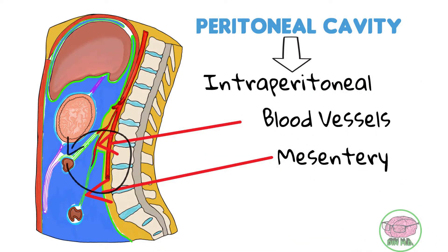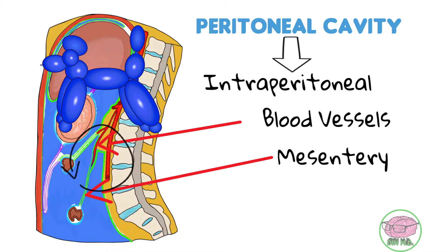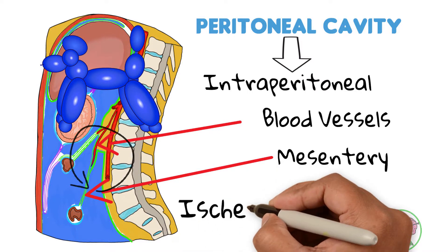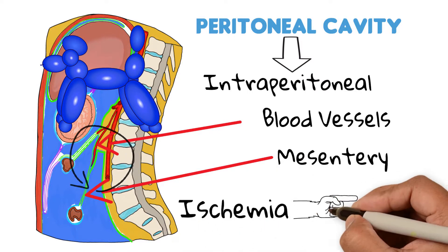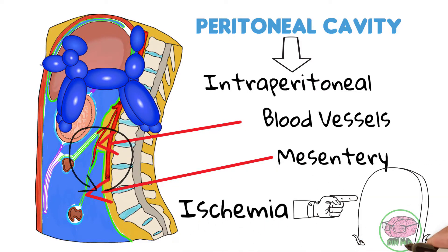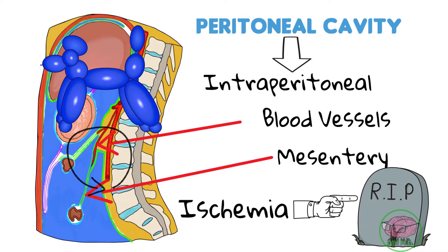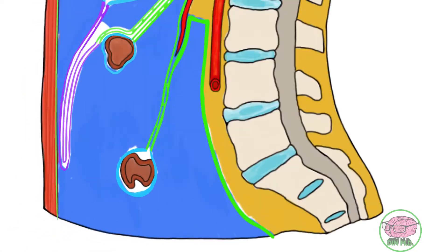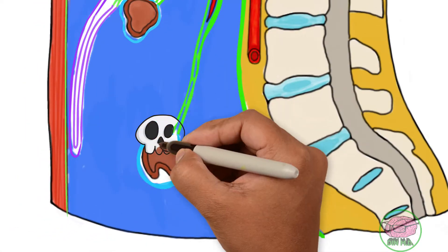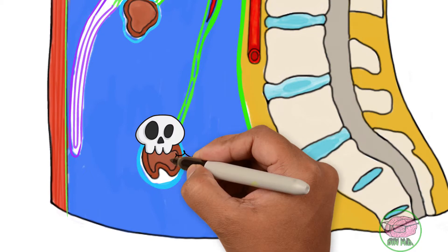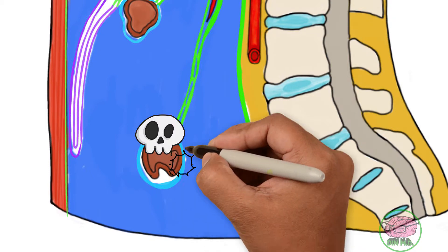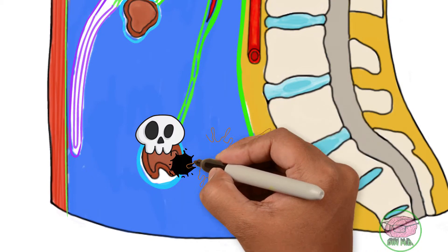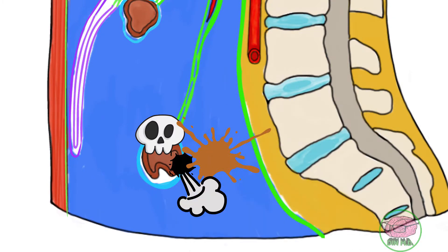So if the colon twists like a balloon, the blood vessels would twist as well, causing ischemia — which leads to the death of the intestine, known as necrosis. The death of the intestine leads to a perforation in its wall, liberating its liquid and gas contents.